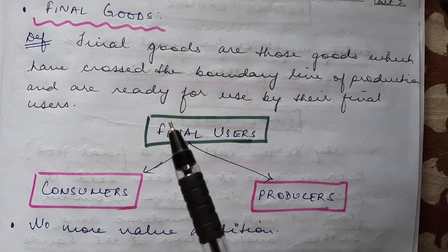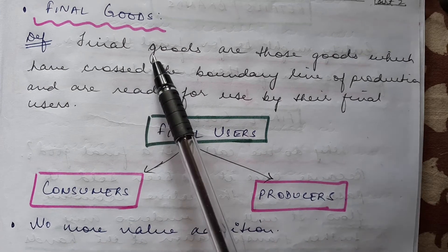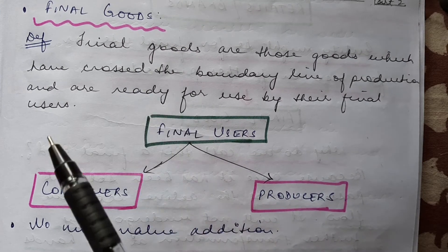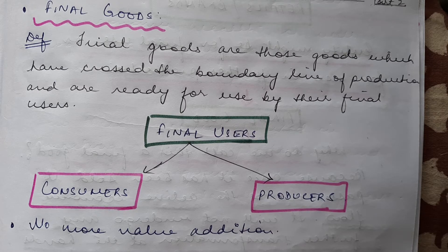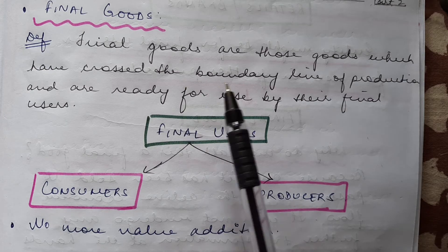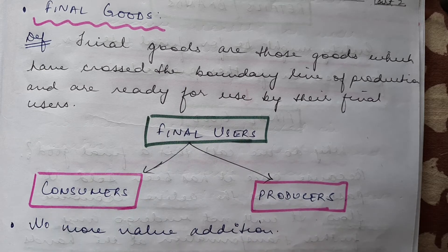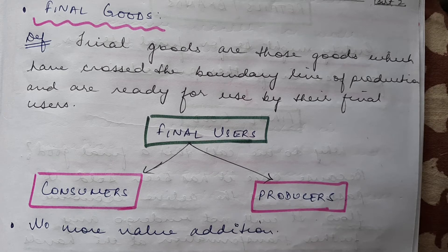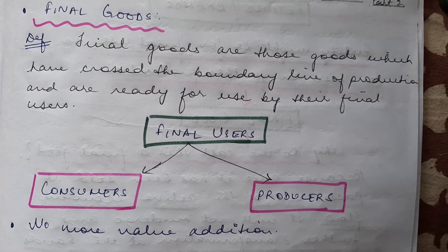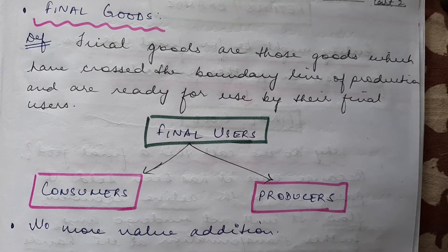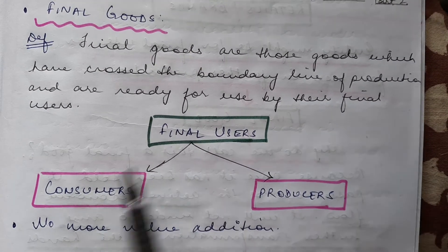Now, what are final goods? As the name suggests, final goods are goods which have crossed the boundary of production — that is, they are no more put into further stages or a further chain of manufacturing. They have crossed that boundary line of production and are ready to be used by the final user. So whoever the final user is, they are ready to use that final product.